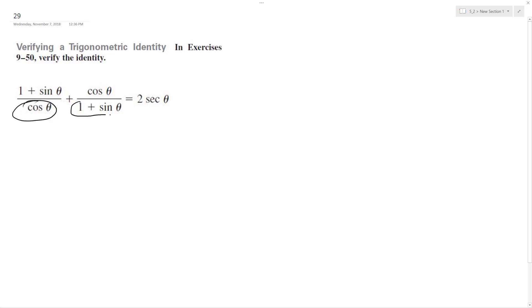The common denominator will be cosine theta times (1 plus sine theta). So we have (1 plus sine theta) times cosine theta plus cosine theta times cosine theta, all over cosine theta times (1 plus sine theta).